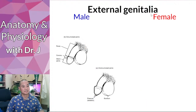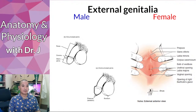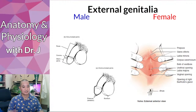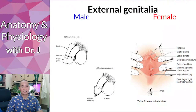External genitalia are what you can see without having to use imaging or going inside the body. This view is showing the vestibule of the vagina, but this is everything you can see on the outside.